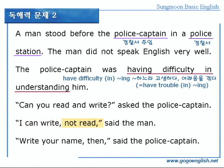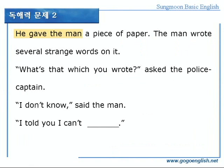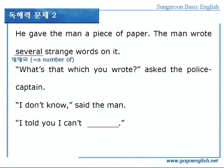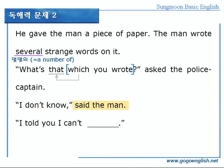이때 difficulty는 trouble로 바꿔서 have trouble in -ing, 또 같은 표현입니다. 그리고 이때 in은 생략이 가능합니다. 다음, 'Can you read and write?' 글을 읽고 쓸 줄 아세요? asked the police captain, 경찰서 주임이 물었다. 'I can write,' 글을 쓸 수는 있는데요, 'not read,' 읽지는 못합니다, said the man, 그 남자는 말했다. 'Write your name then,' 그럼 당신의 이름을 써보세요, said the police captain, 경찰서 주임이 말했다. He gave the man, 그는 그 남자에게 주었다, a piece of paper, 종이 한 장을. The man wrote, 그 남자는 썼다, several strange words, 몇몇 이상한 말들을, on it, 종이 위에다. Several은 몇몇이란 뜻으로, 같은 표현으로는 a number of가 있습니다. 'What's that which you wrote?' 당신이 쓴 게 뭐죠? asked the police captain, 경찰서 주임이 물었다.